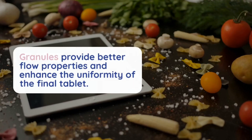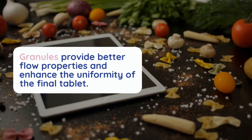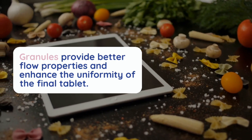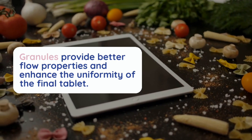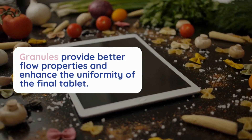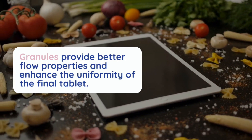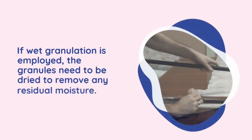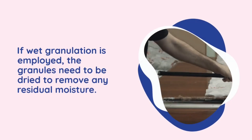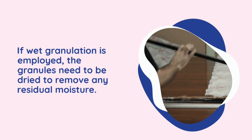Stage 4: Drying. If wet granulation is employed, the granules need to be dried to remove any residual moisture. Drying can be carried out using methods like tray drying, fluid bed drying, or vacuum drying. It is crucial to ensure that the granules are properly dried to maintain their stability and prevent issues during the compression stage.